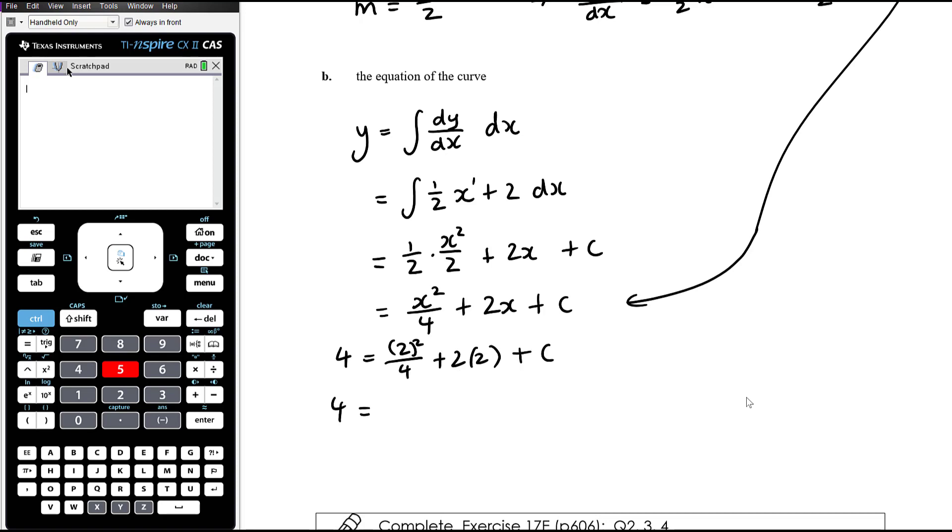So 4 equals now 2 squared on 4, that's 4 on 4, so that's 1 plus 4 plus c. So 4 equals 5 plus c. And so c is going to be negative 1. And so therefore the equation of the curve is y equals x squared on 4 plus 2x minus 1.